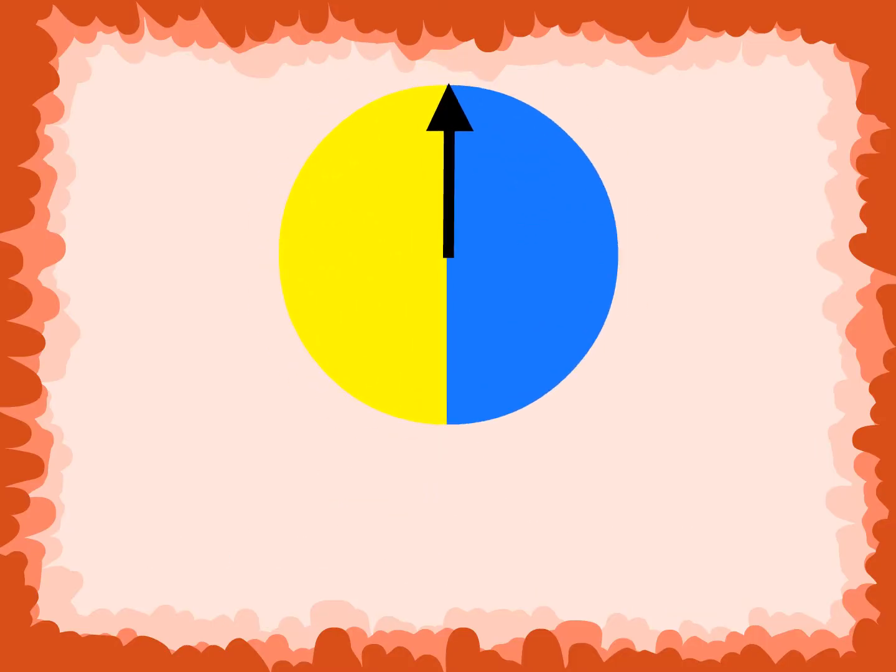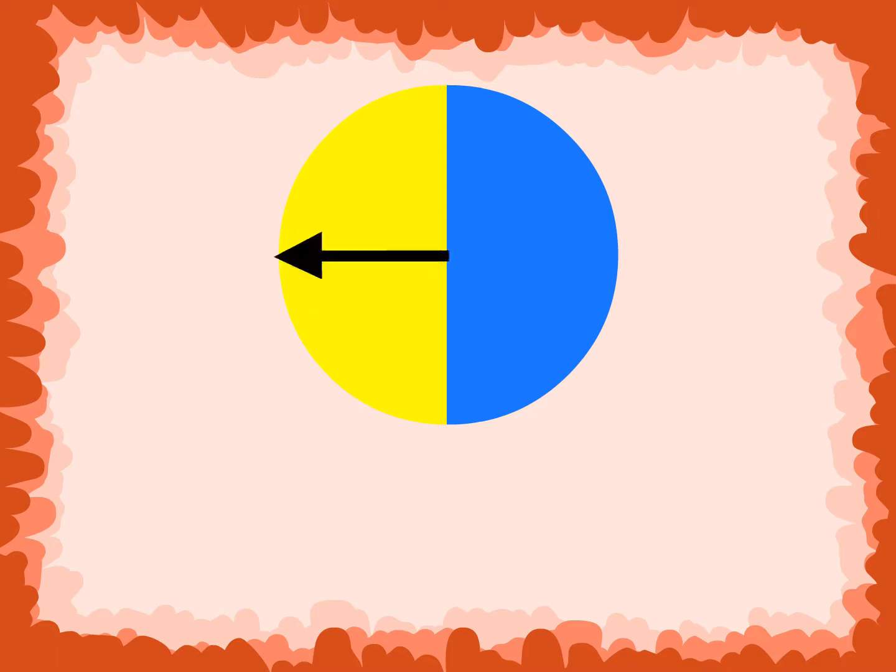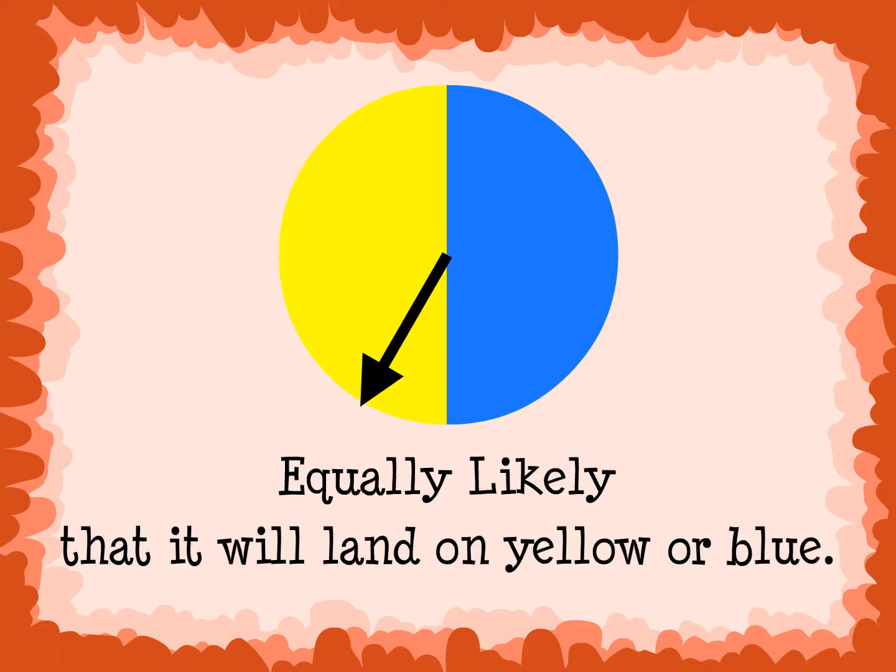If we were to predict the outcome of this spinner, we would say that it is equally likely that it will land on yellow or blue.